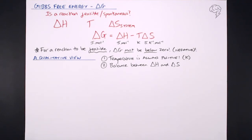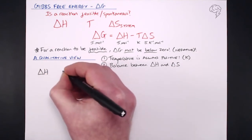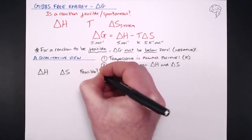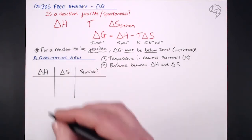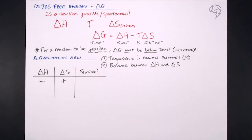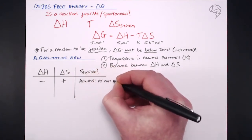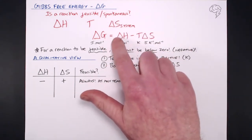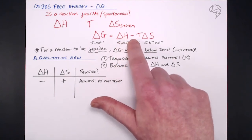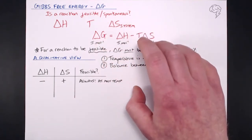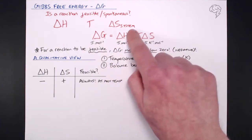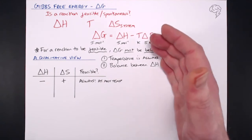Delta G needs to be negative for a reaction to be feasible. Let's look at the different combinations of delta H and delta S. If we've got a negative delta H — an exothermic reaction — and a positive delta S — an increase in entropy — the reaction is always going to be feasible at any temperature. If delta H is negative and we're subtracting a positive value, delta G can only get more negative.